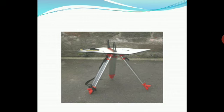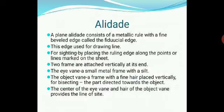This image shows plane table surveying work in progress. There is a tripod stand placed on the ground, and above it lies the plane table arrangement consisting of various equipment. The first component of plane table surveying is the alidade. A plane alidade has a metallic rule — that is, a scale with fine beveled edges.